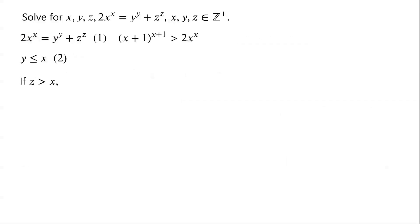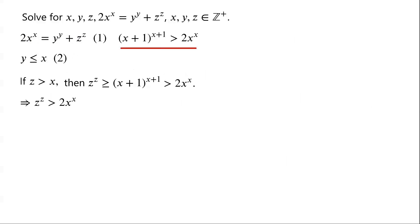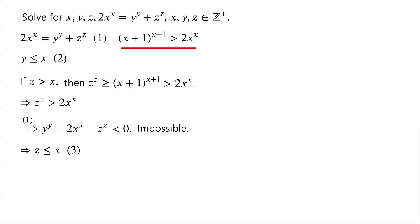Similarly, if z is greater than x, then z to the power of z is greater than or equal to (x+1)^(x+1), which as we have proved is greater than 2 times x to the power of x. From equation 1, we have y to the power of y equals 2 times x to the power of x minus z to the power of z, which is less than 0. Since y to the power of y less than 0 is impossible, therefore z must be less than or equal to x.